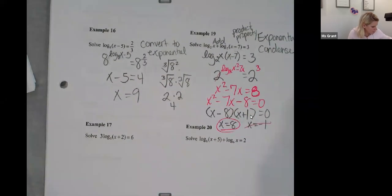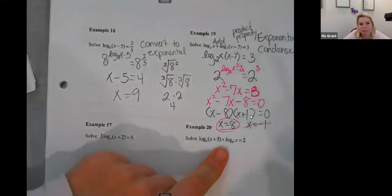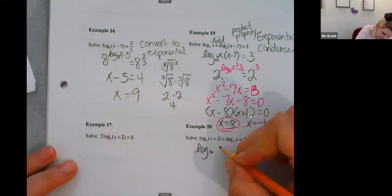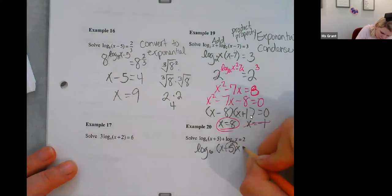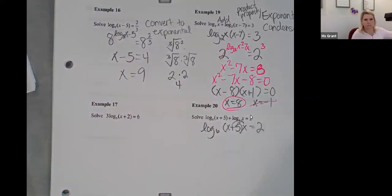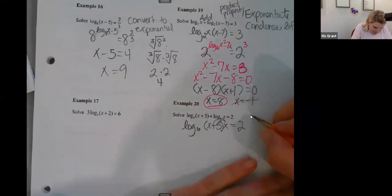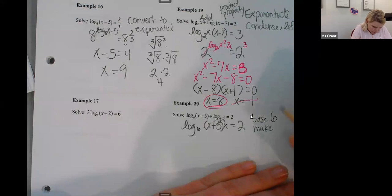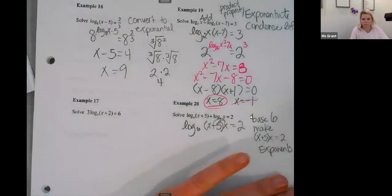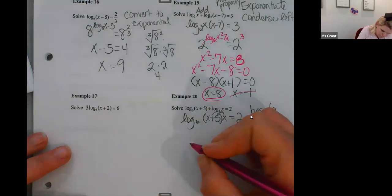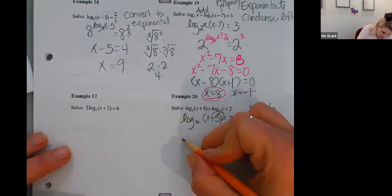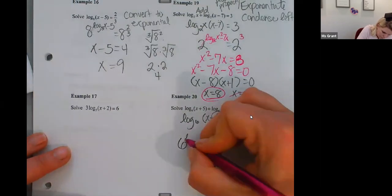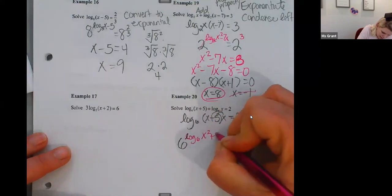We just did 19. I want to do 20 because they're so similar. You guys look, it's an addition problem. That means log base six of X plus five times X, which I'm going to have to distribute. This is a base six. So I need to make the X plus five and the two exponents. Six.